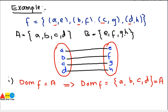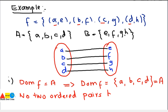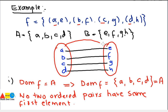The domain {a, b, c, d} is equal to A, so condition one is satisfied. For condition two, every element of A should be mapped uniquely to an element of B. It is clear that no element in A is mapped to more than one element — each maps to exactly one element — and no two ordered pairs have the same first element. Both conditions are satisfied, so f is a function from A to B.